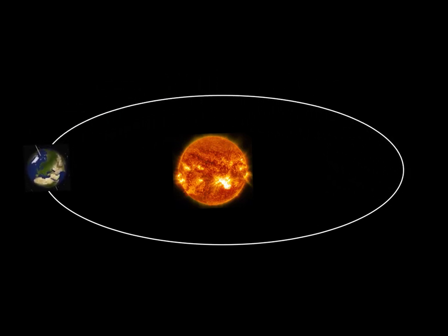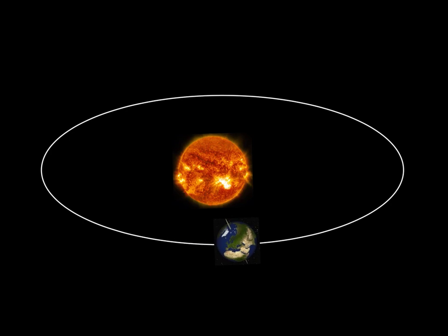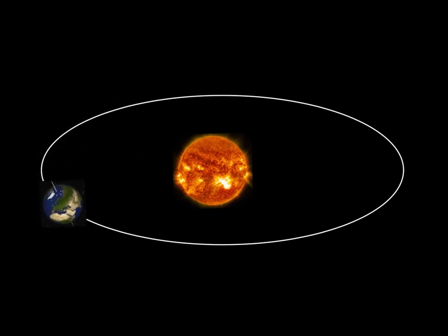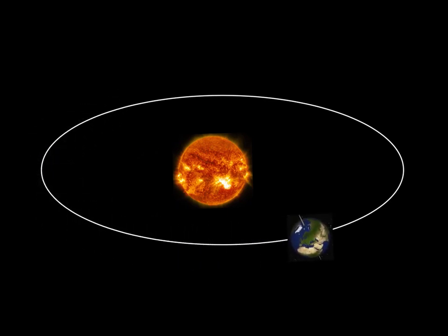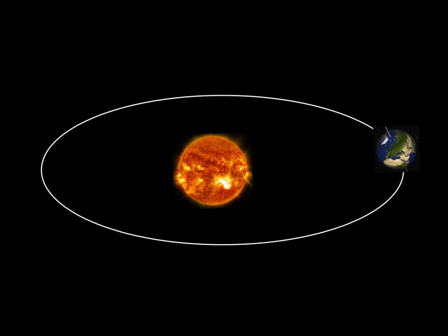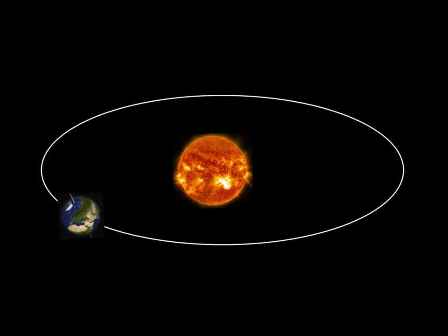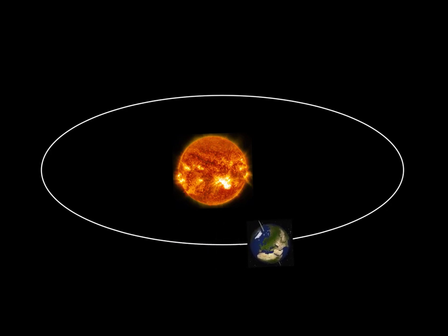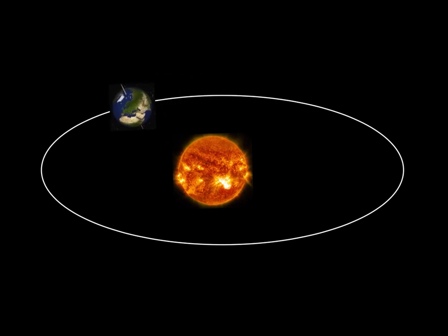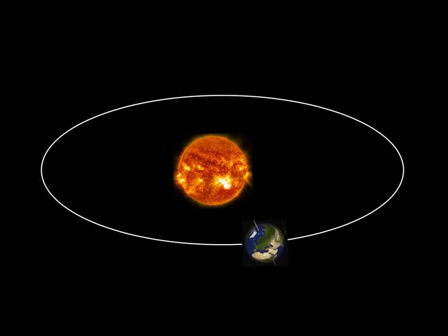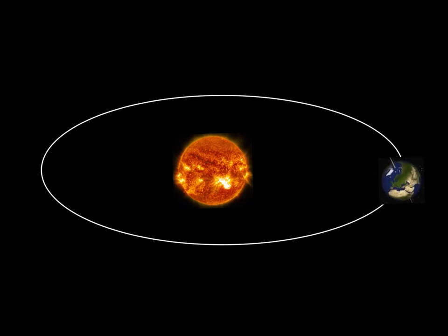It takes Earth 365 and one-fourth days to revolve or move around the Sun — also known as one year, 12 months, or 52 weeks. This year, 2016, it is a leap year, so in February, instead of having 28 days, we have 29. That's because we had four years of that quarter day accumulating.